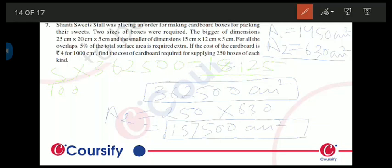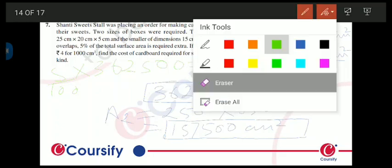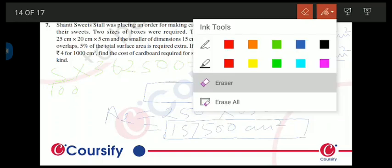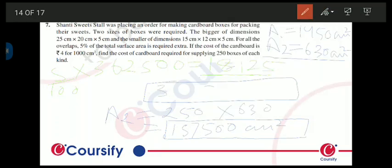So हम 18,125 को जब इस initial value में add करेंगे, तो हमारे पास extra area plus area required for making the bigger boxes आएगा: 3,80,625.